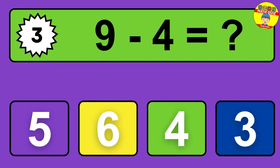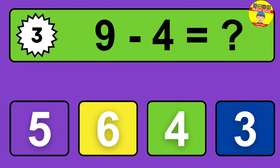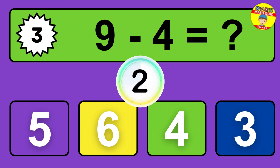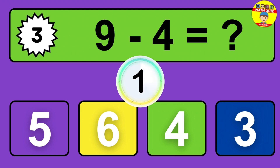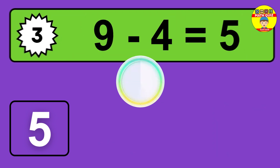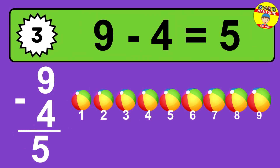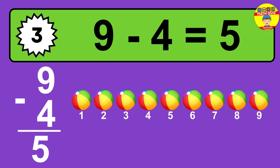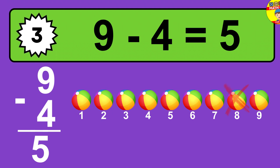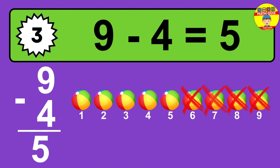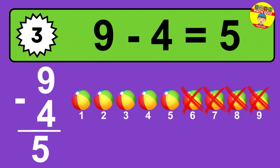Question three: nine minus four equals what? The answer is nine minus four is five. Let's count it: one, two, three, four, five.